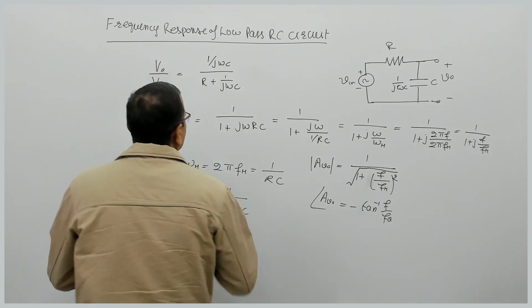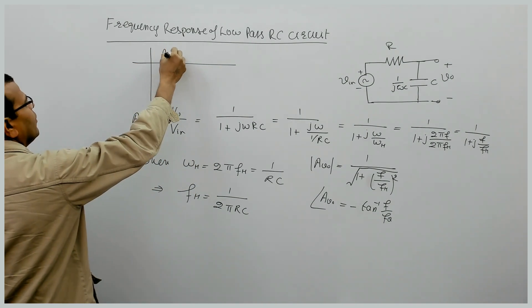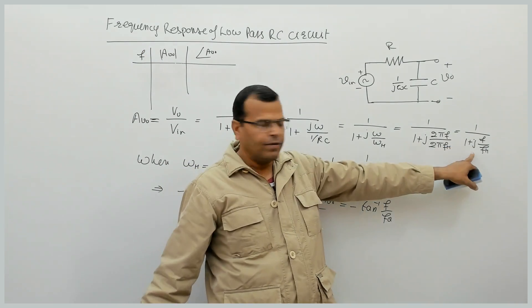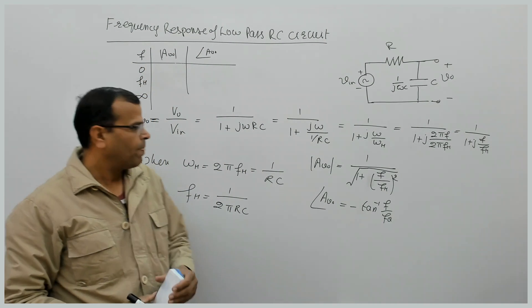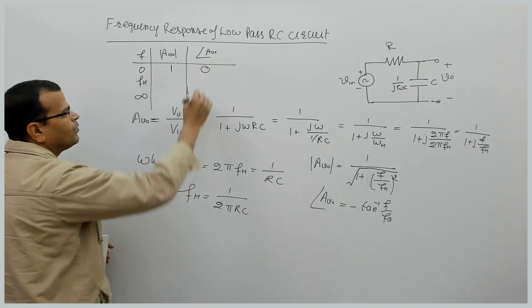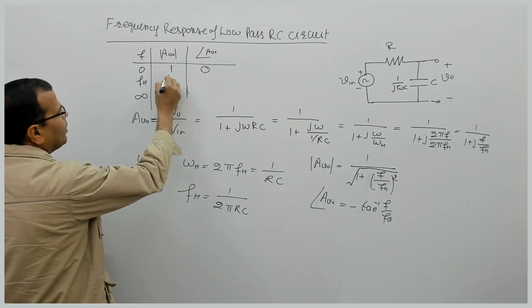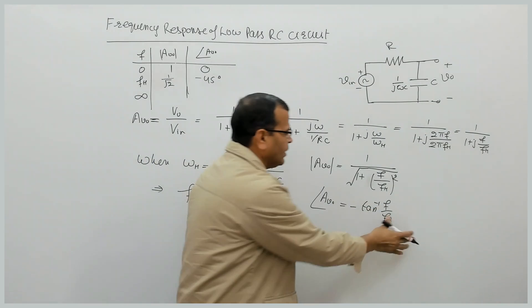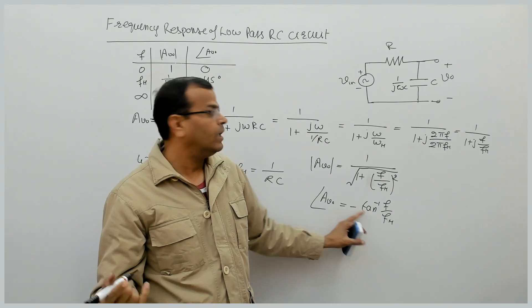If we draw the variation of magnitude and phase angle with frequency, varying F from 0 to infinity: when F = 0, the magnitude is 1 and the phase angle is 0°. When F = FH, the magnitude is 1/√2 and the phase angle is −tan⁻¹(1) = −45°.